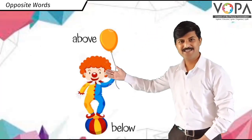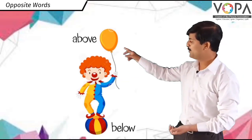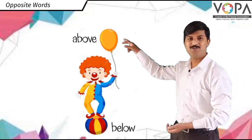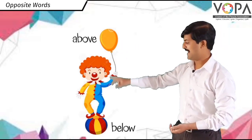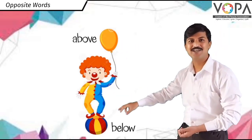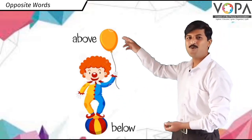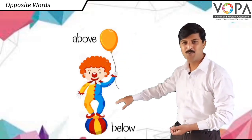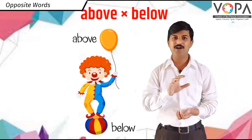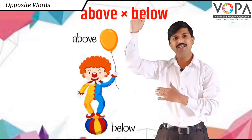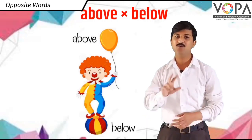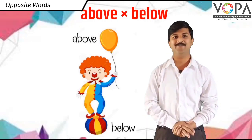See this picture. Balloon — the balloon is above the joker. And the ball — the ball is below the joker. Above and below are two opposite words. In Marathi: varthi ani khali — he duni ulat artha che shabda ahet.